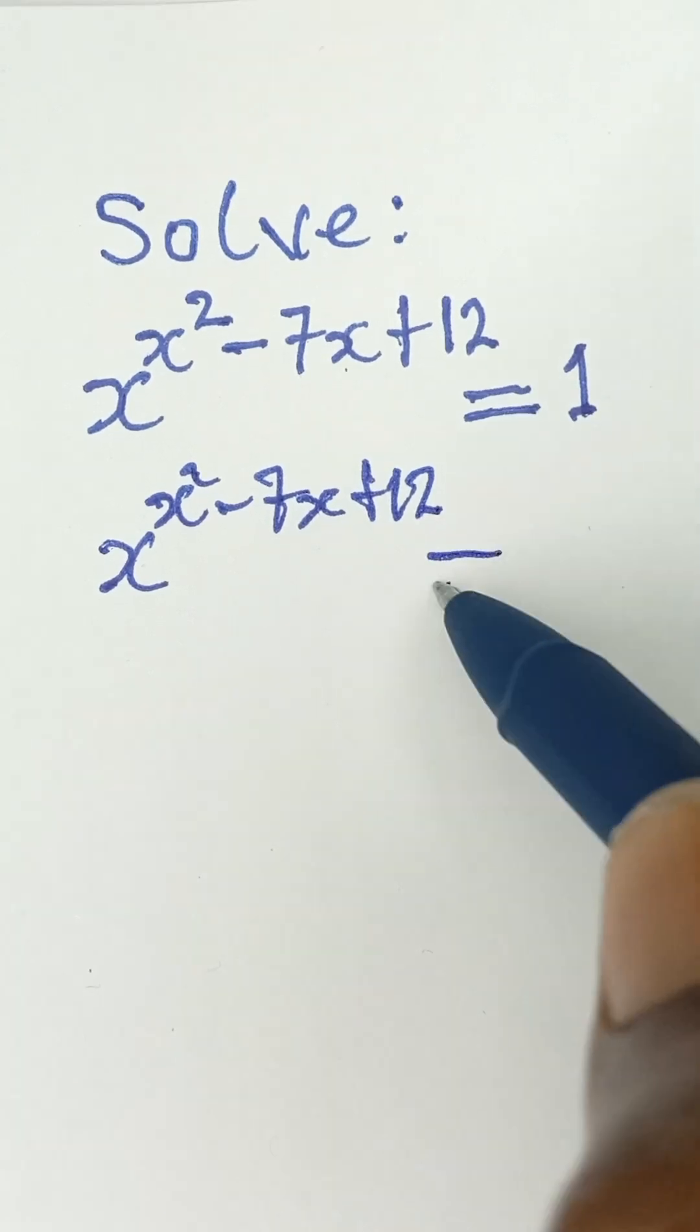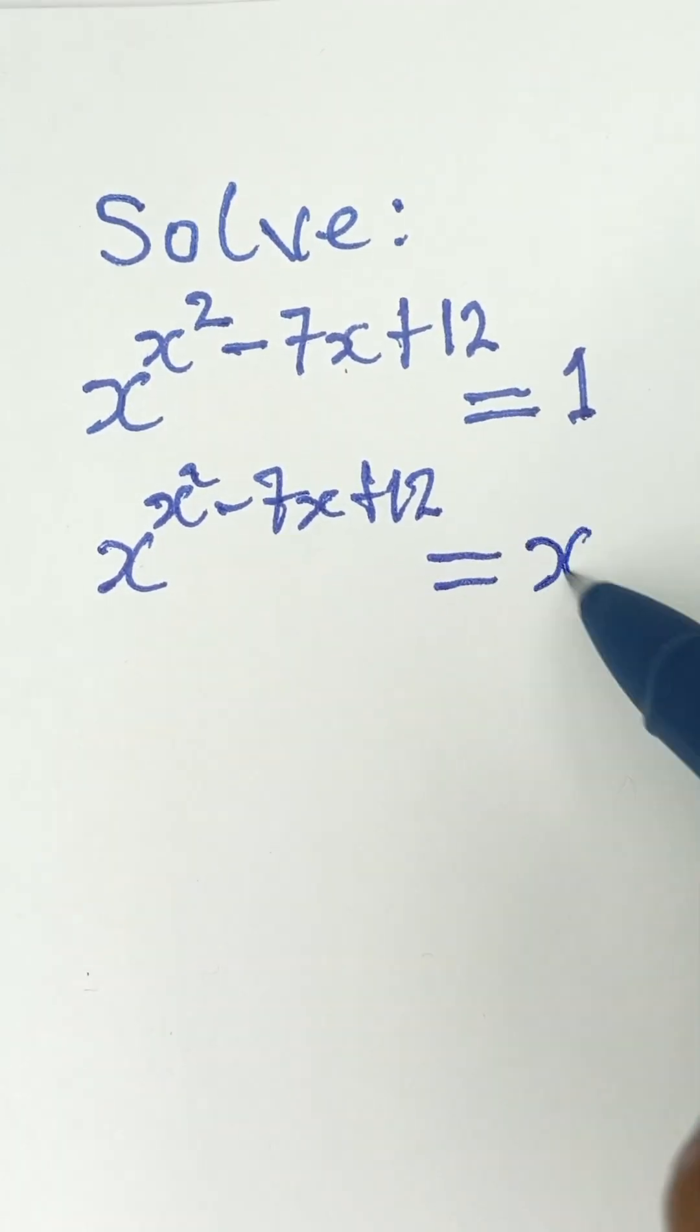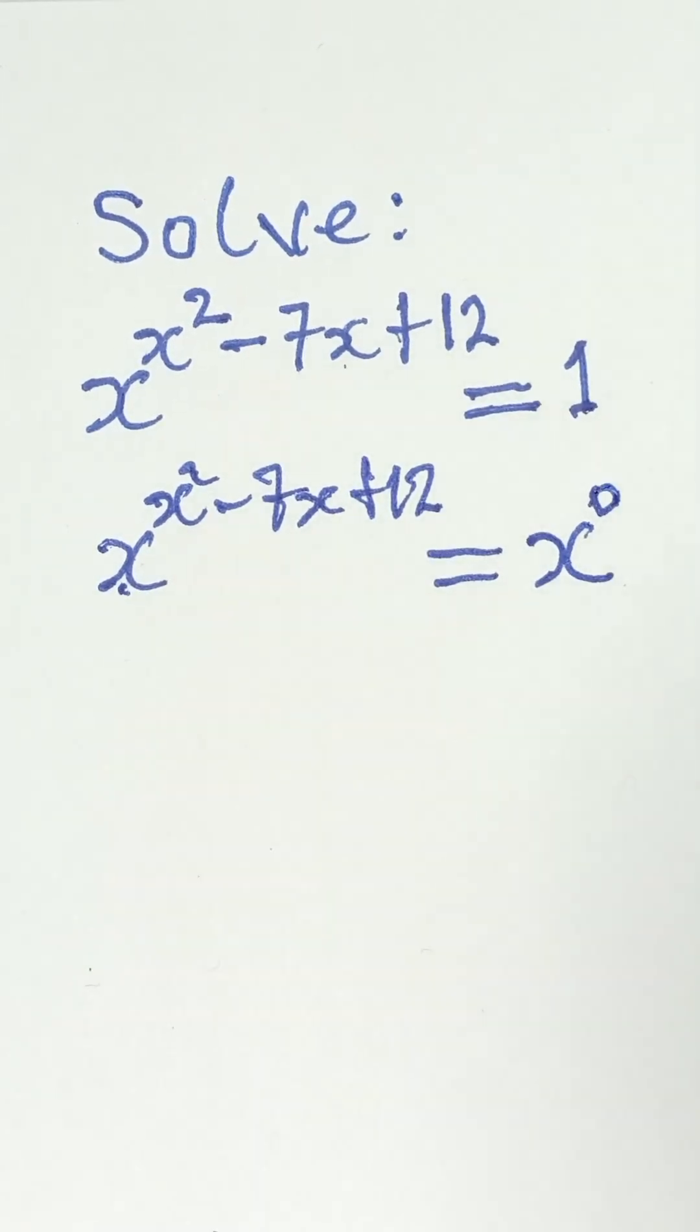And that will be equal to... Now, this 1 can be expressed as x, that is this base, raised to the power of 0. Because any number raised to the power of 0 is equal to 1. So, x raised to the power of 0 is the same thing as 1.